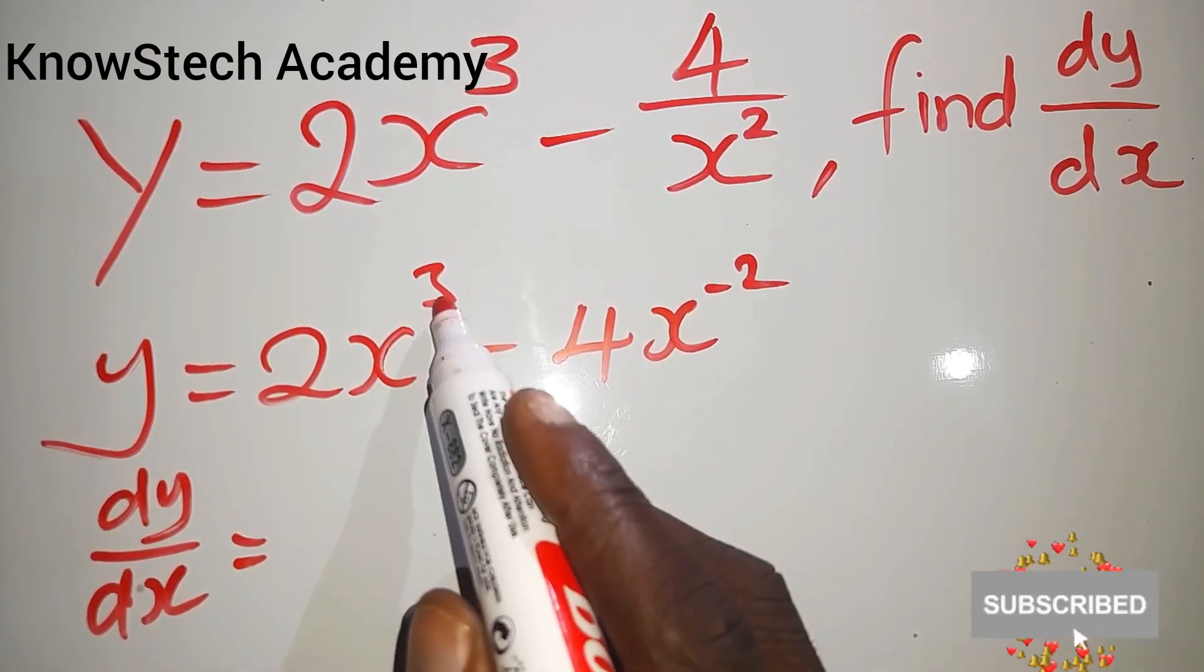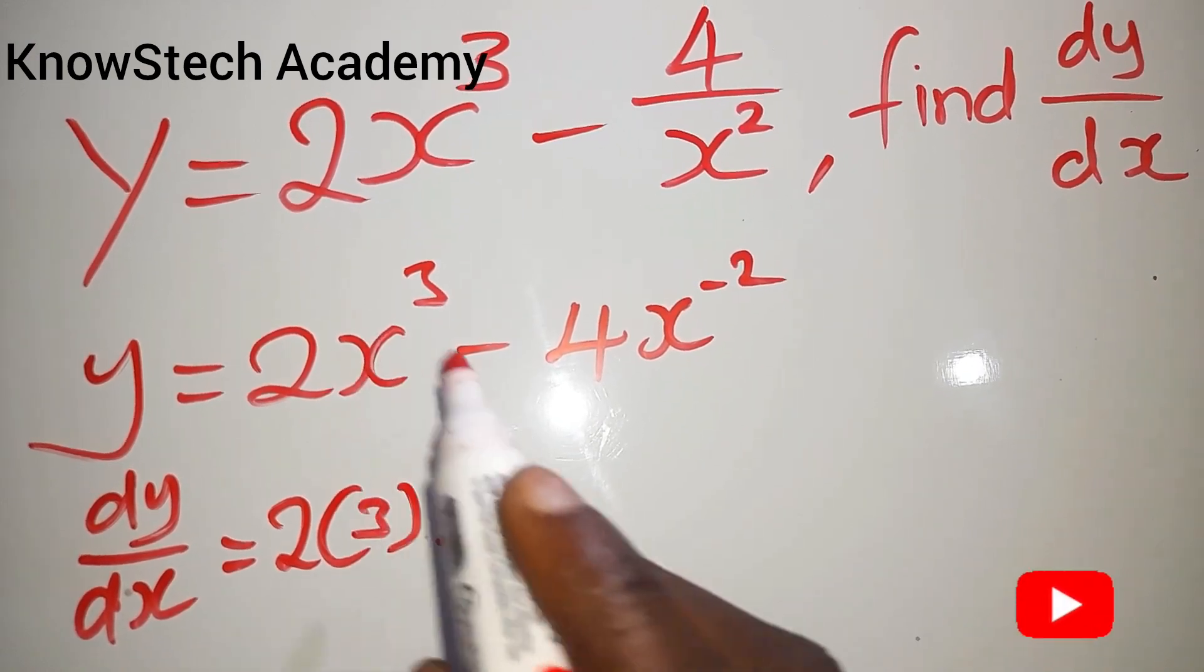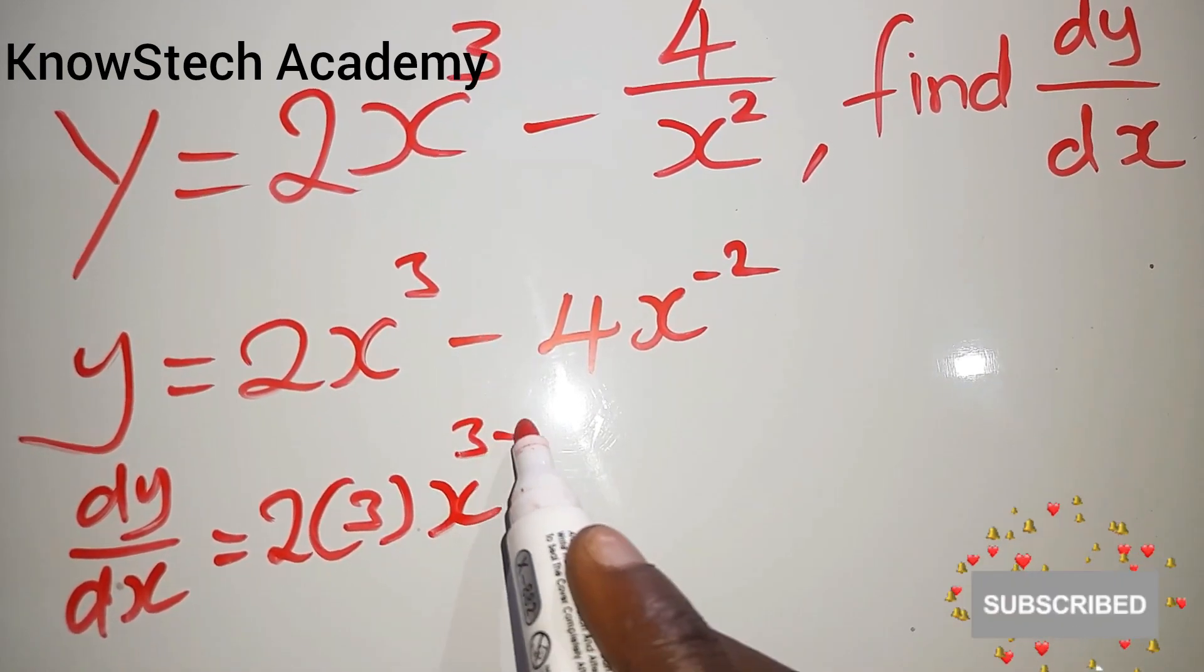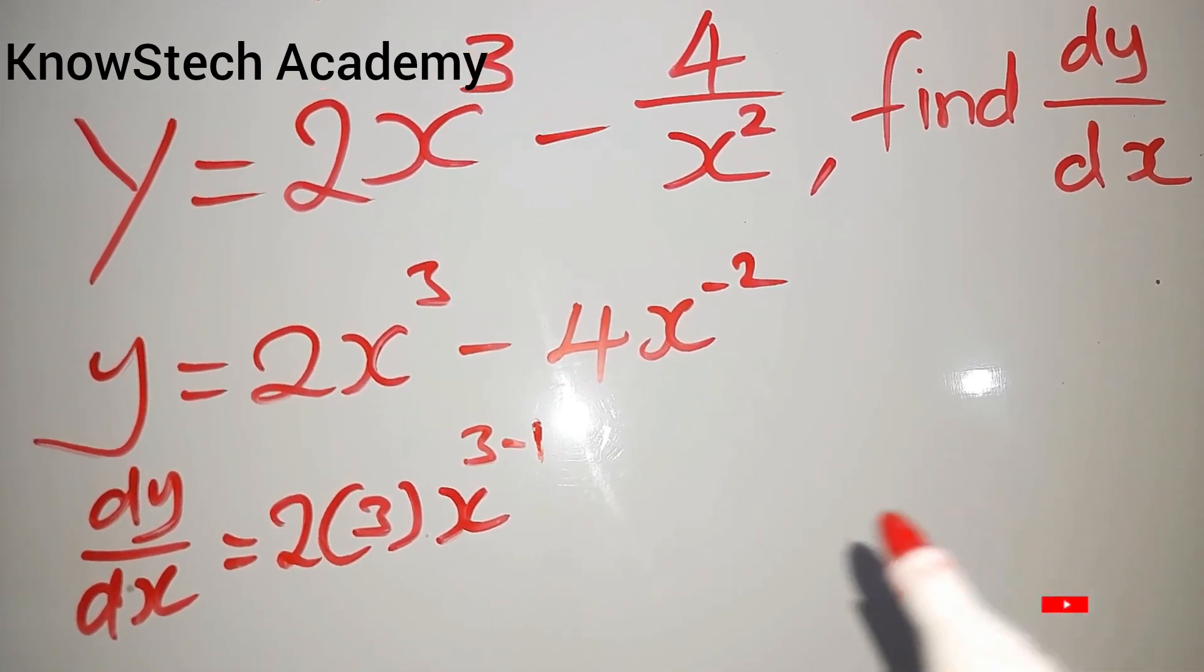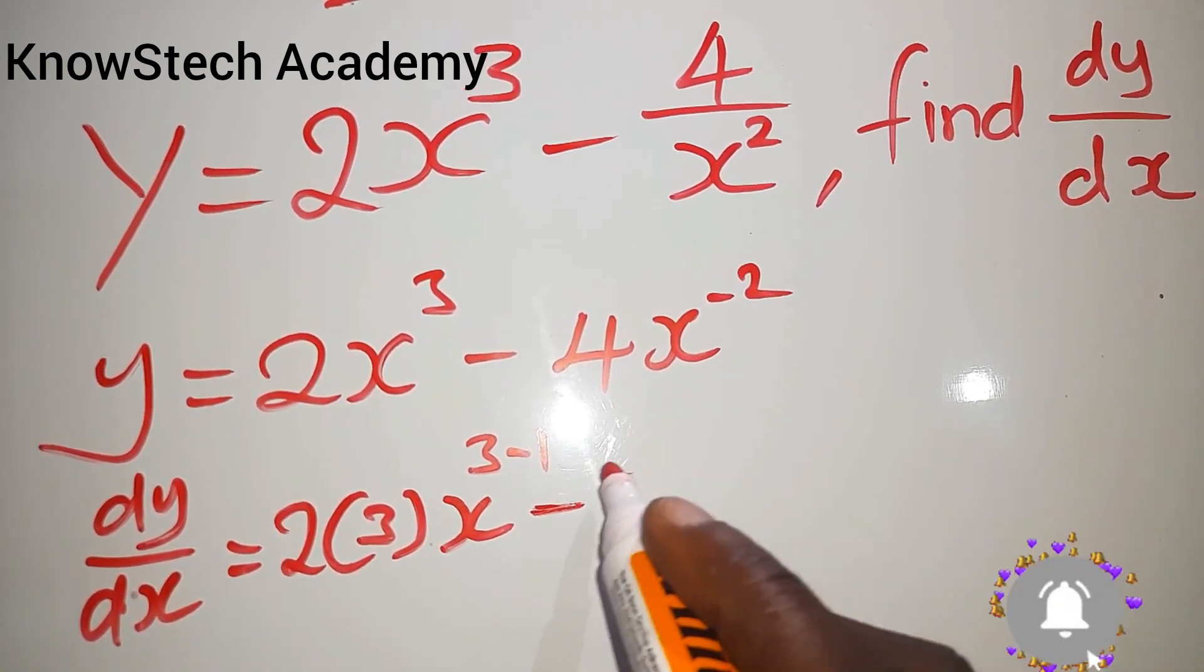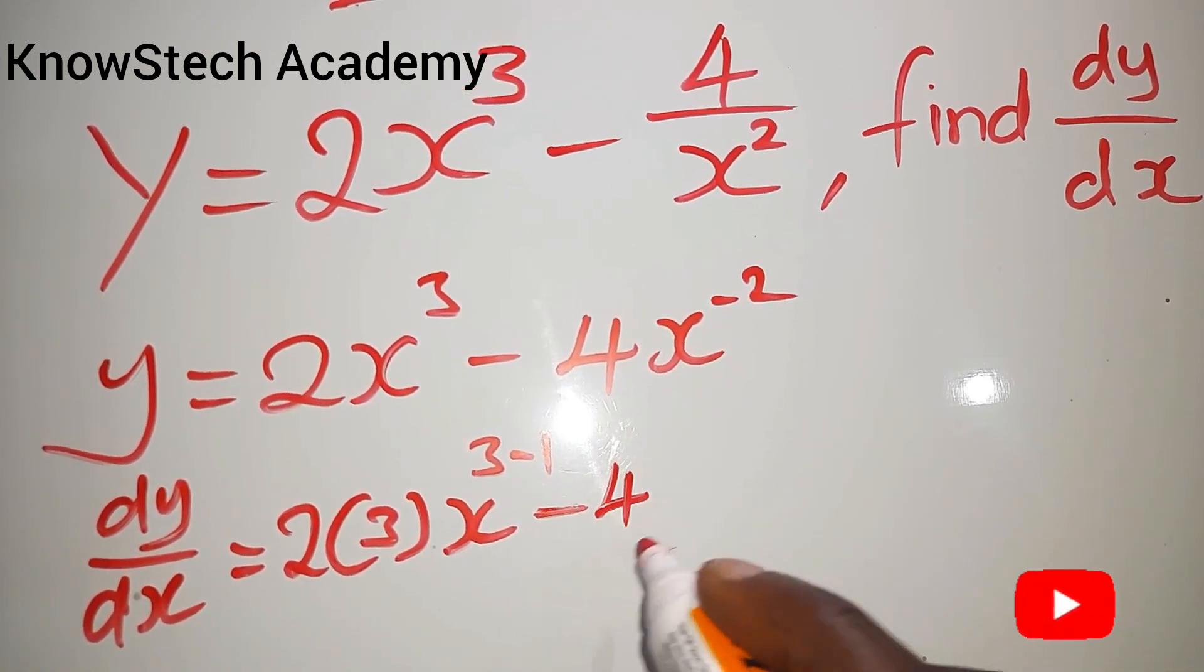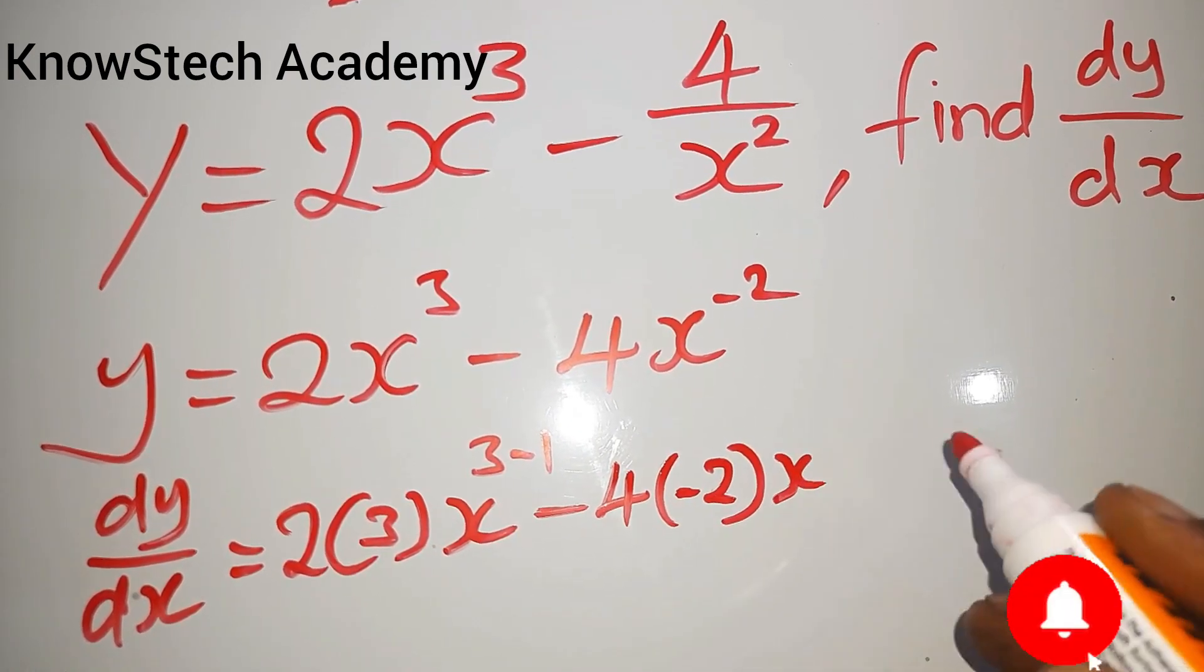So it will be 3 times 2, and then the power reduces by 1, which will be 3 minus 1. Then minus, you do the same here, would be negative 4 times negative 2 x to the power negative 2 minus 1.